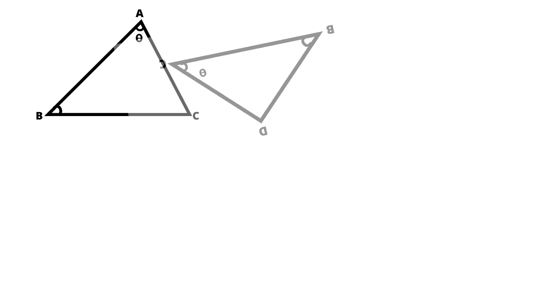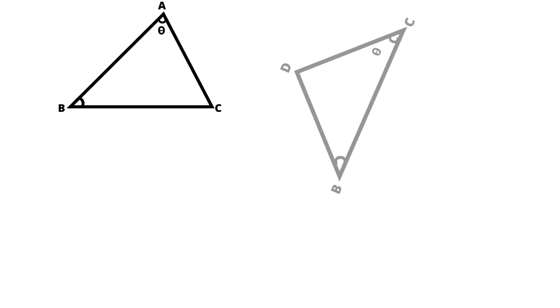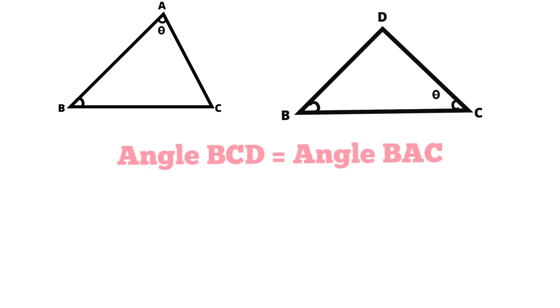To find out, let's draw the triangles BDC and triangle ABC separately. It is given that angle BCD equals angle BAC. So let's consider angle BCD equals angle BAC as theta.